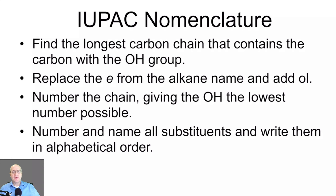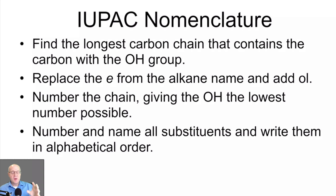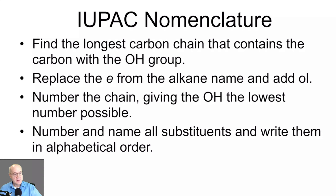Now we're going to talk about IUPAC nomenclature of alcohols. It follows a lot of the same rules that we've already learned for naming alkanes and alkynes and alkenes, but now we have to think about the alcohol. When you're using IUPAC nomenclature, the first rule is always find the longest continuous chain that contains the alcohol — the OH group.